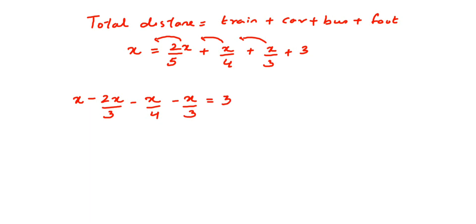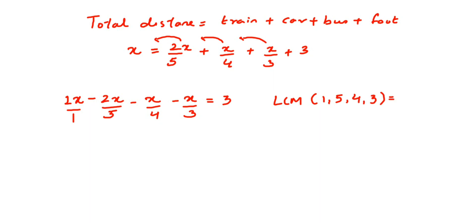We have fractions with different denominators, and x can be written as x by one. So we need to take the LCM of the denominators: one, five, four, and three. When you calculate the LCM, it equals 60. Our task now is to make all denominators equal to 60.